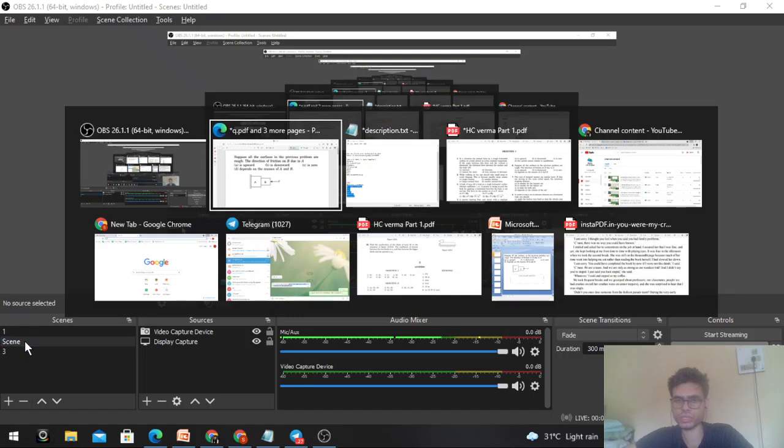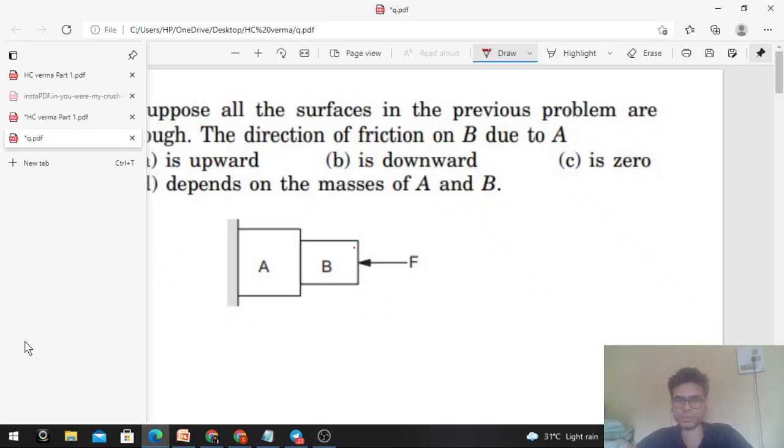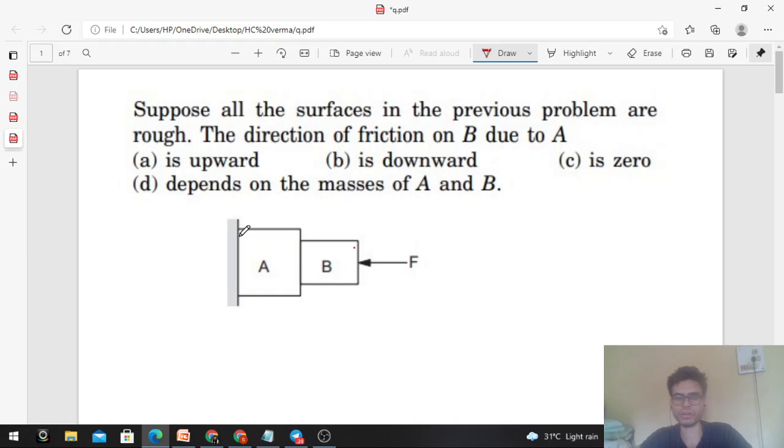Okay, hi everyone. So today let's discuss one interesting problem from H.C. Verma. Actually, this is the second part because we have already discussed the first part. So let's see. Suppose all the surfaces in the previous problem are rough. The direction of friction on B due to A.